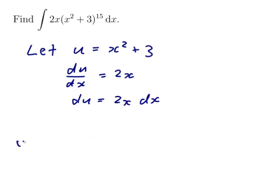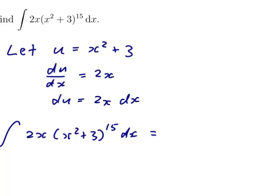So it looks like I can finish it now. So now the integral of 2x times x squared plus 3 to the 15 dx is equal to the integral of u to the 15 du.